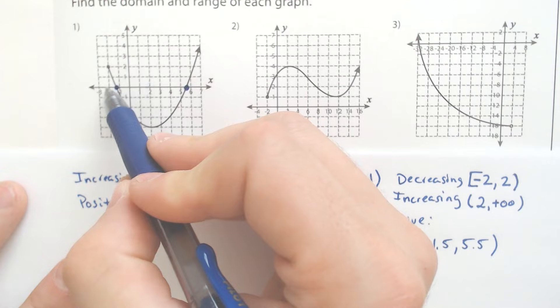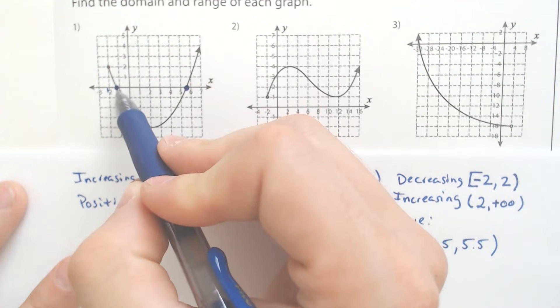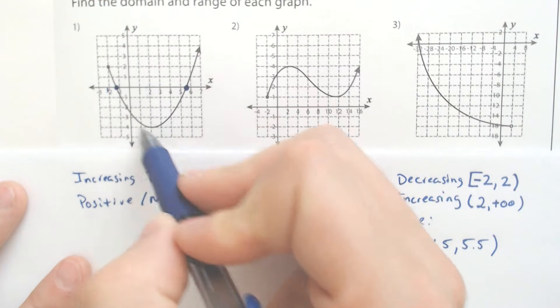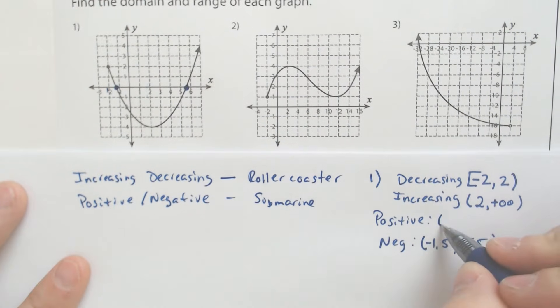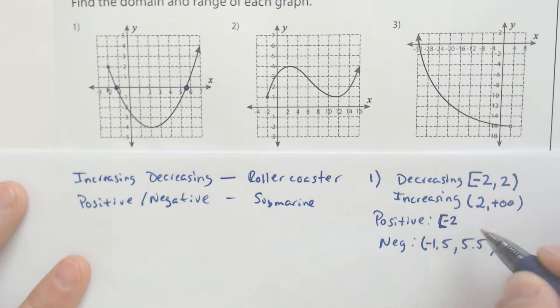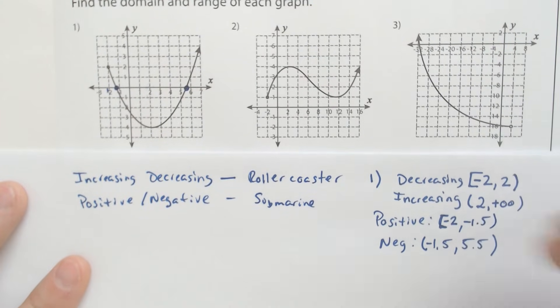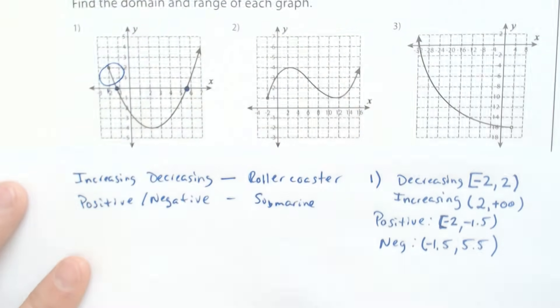We are positive on two intervals. We are positive from negative 2 to negative 1.5. That is when we are above the water, we jumped off and then splashed down from negative 2, including the negative 2, to negative 1.5. But that was just this chunk, right?